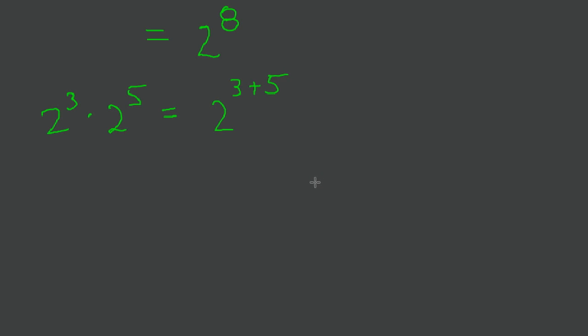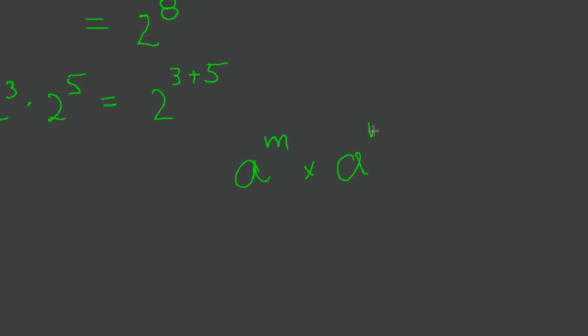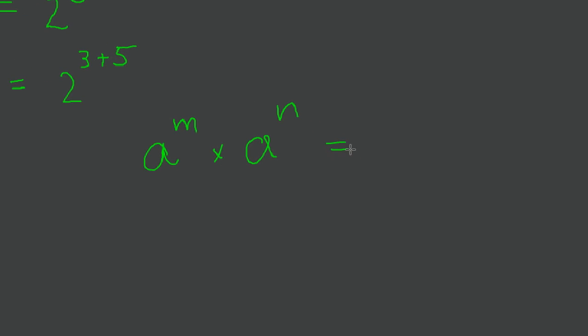And that leads to our important first law which says a to the exponent m times a to the exponent n will simply be a to the exponent m plus n.